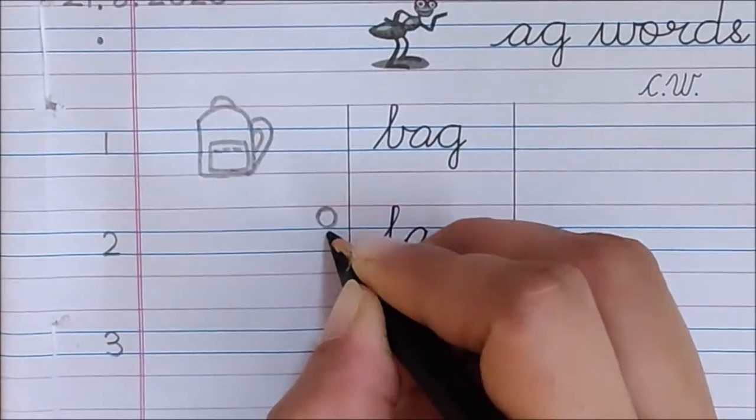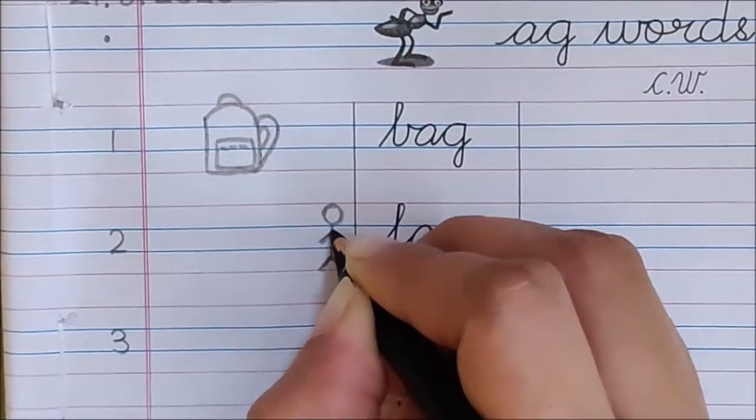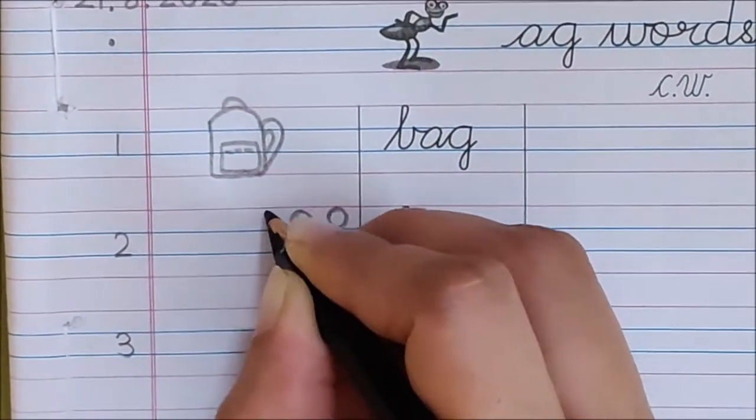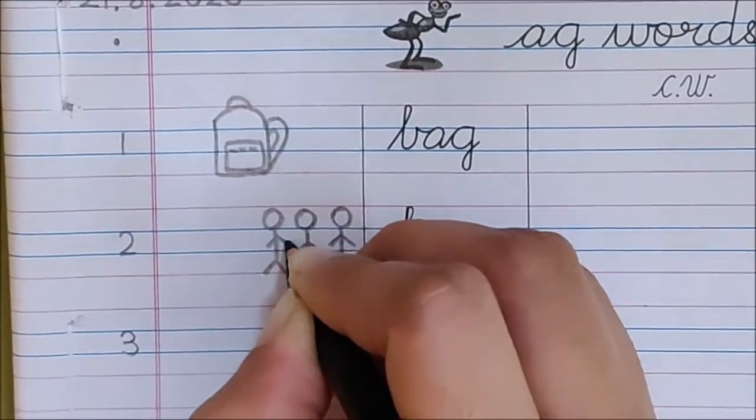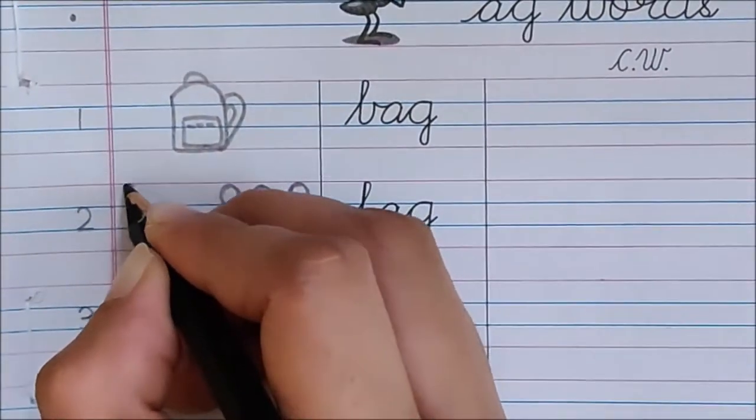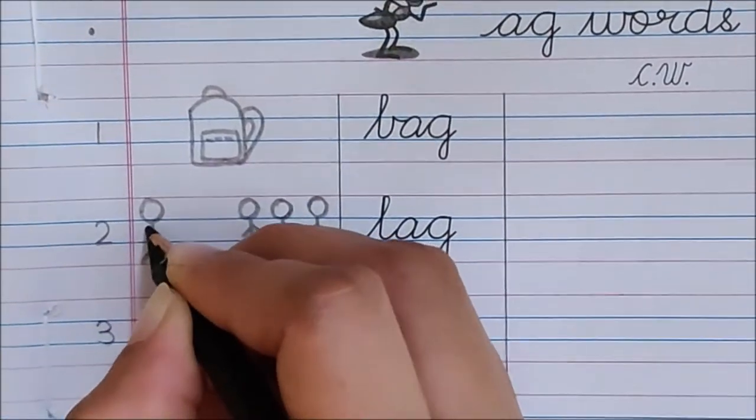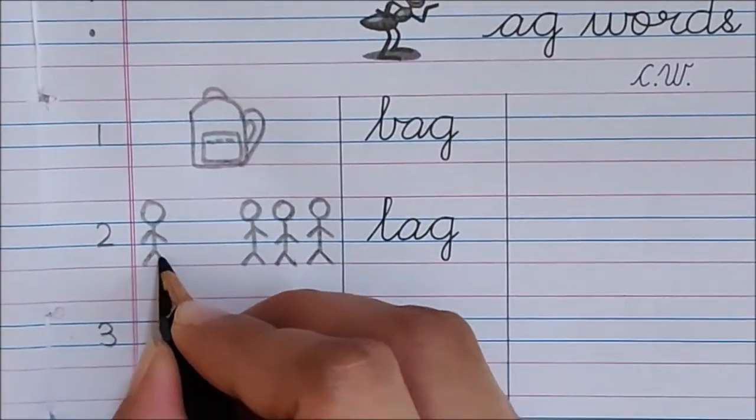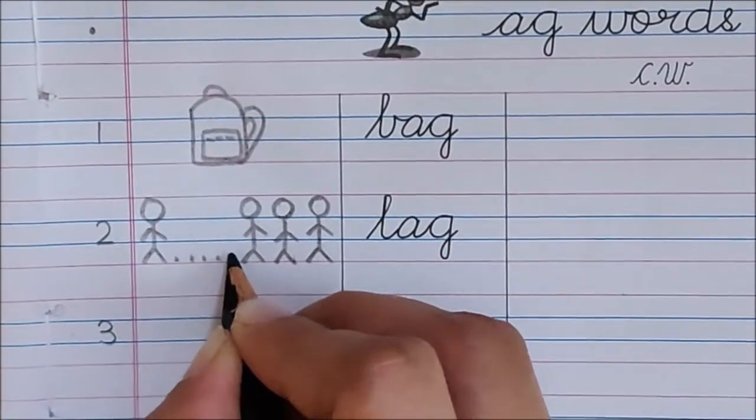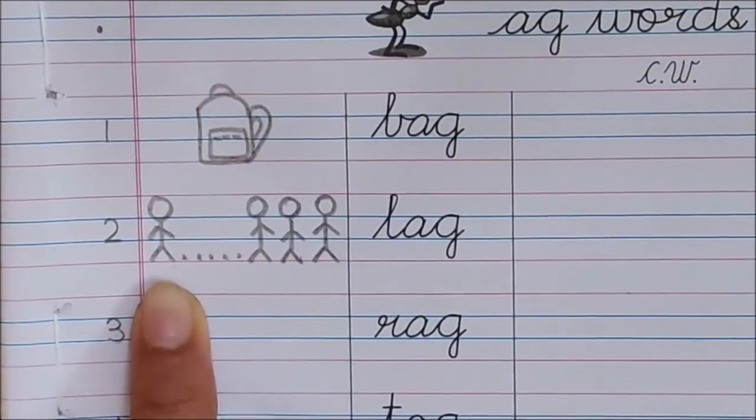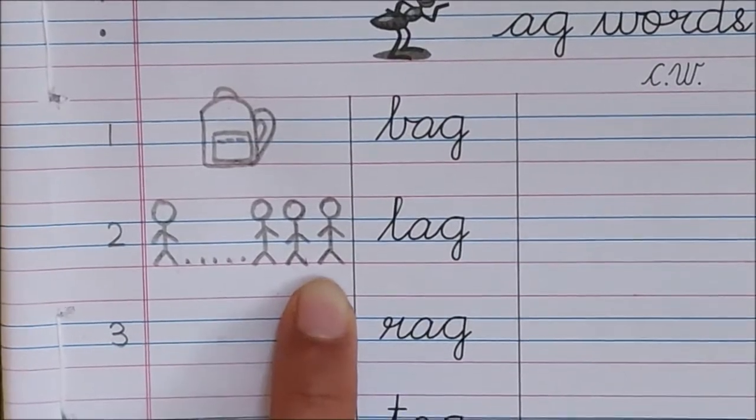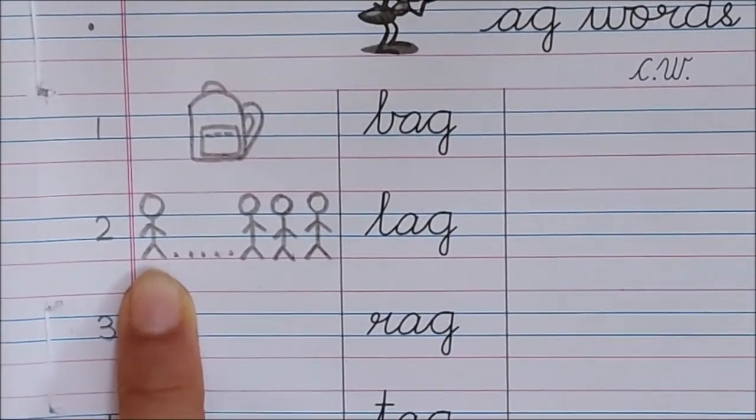See children, there are some children here. 1, 2, 3. Three children are going for their dance class, but one child is very behind. See, he is so behind. Three children are in front and he is so far. So this child is lagging behind. Matlab, wo piche hai, bohot piche hai. He is lagging.